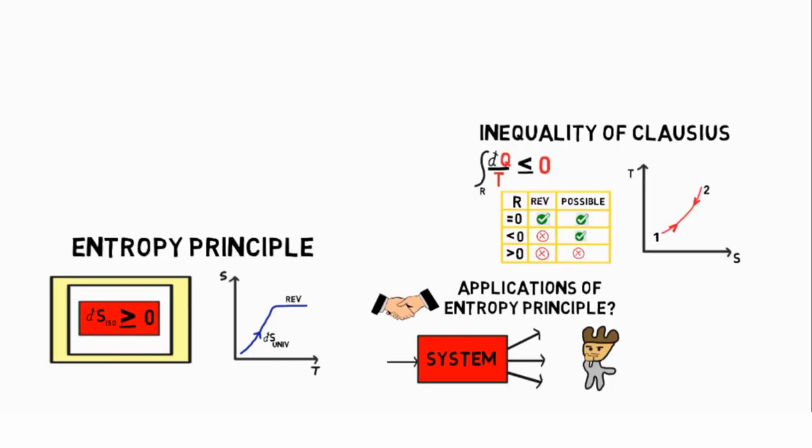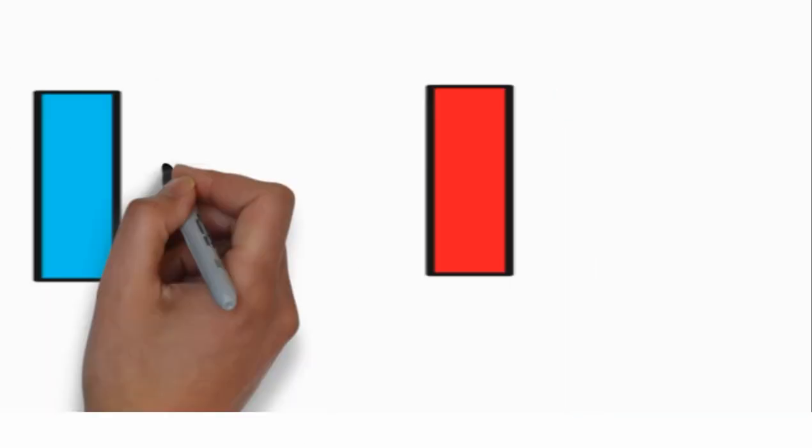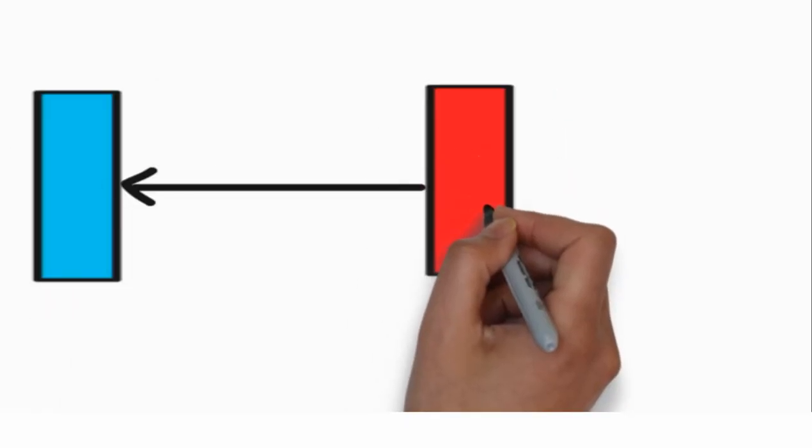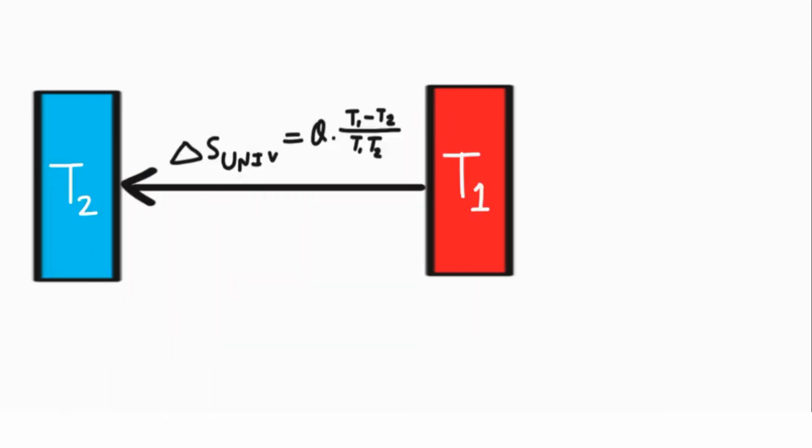After establishing these facts, we move to look at a simple application of the entropy principle. Consider the transfer of heat through a finite temperature difference. If you write the equation for entropy for this particular case,